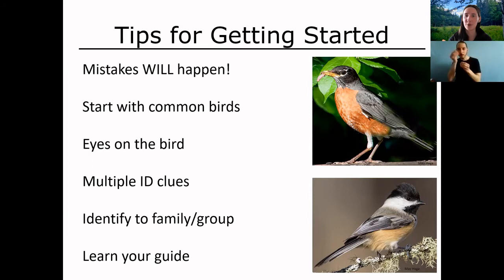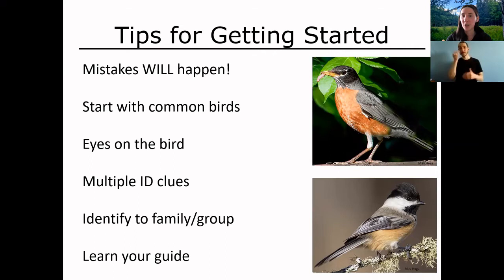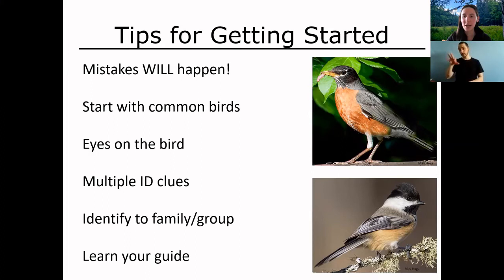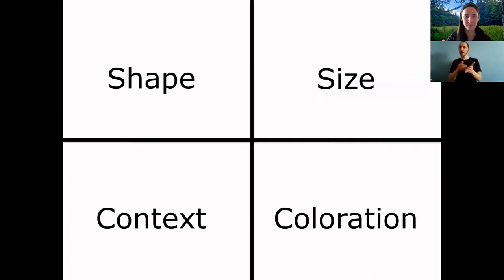Collect as many identification clues as you can about what the bird looks like — its colors, shape — we'll go into those in more detail in a moment. You might only be able to identify a bird to a family or group, like 'that's a gull' or 'that's a duck,' and that's perfectly fine. Also, learn your field guide — whichever one you decide to borrow or buy, keep it on your table and flip through it. You'll glean a lot of information just from looking at the pictures, even if you're not formally studying it.